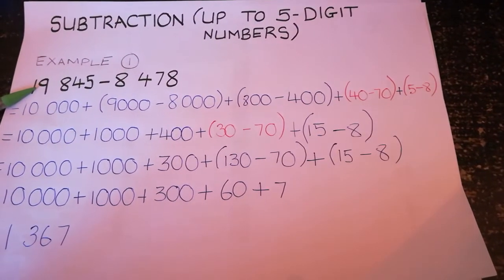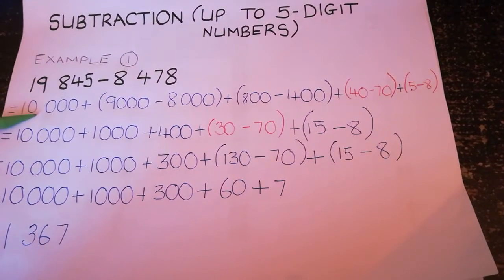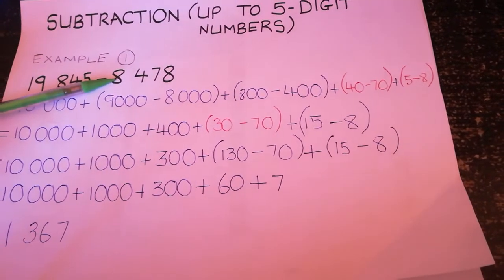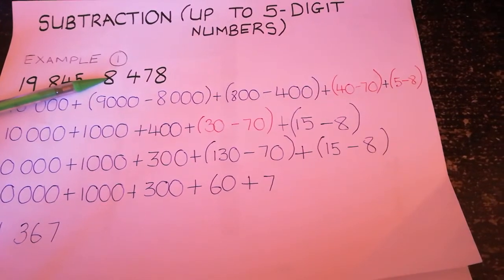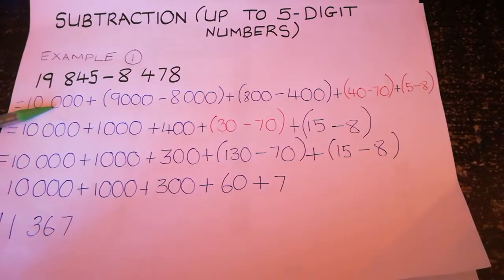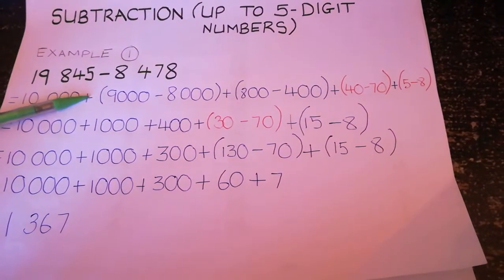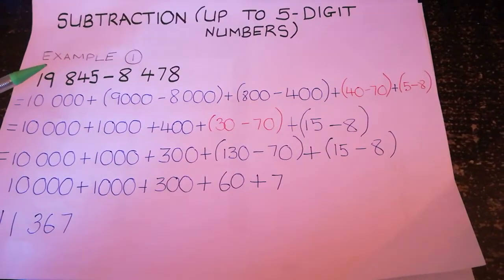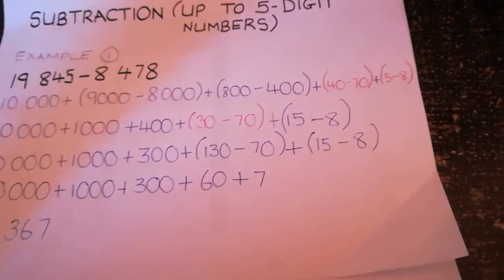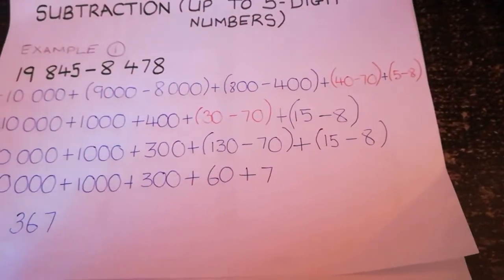In 19,845 we have 10,000. But in this number here, 8,478, we don't have a 10,000, so that 10,000 will stand alone. Next you must put a positive sign because we are adding up the numbers after we subtract them, because we are breaking them up, we need to add them back together.